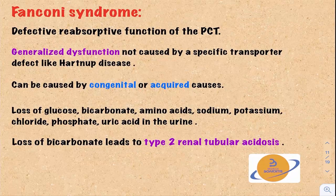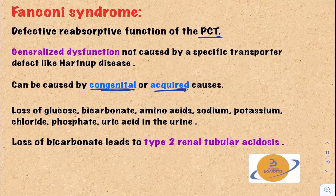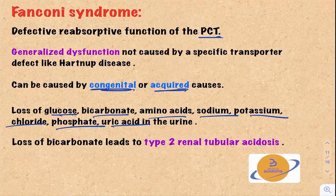The next disorder is Fanconi syndrome. This is a generalized dysfunction of the proximal convoluted tubule. Unlike Hartnup disease, this is not a specific transporter deficiency — it is a generalized dysfunction of the entire proximal convoluted tubule transporters. This disorder can be congenital or acquired. Because of this syndrome, there will be loss of glucose, bicarbonate, amino acids, sodium, potassium, chloride, phosphate, uric acid — pretty much everything — in the urine.